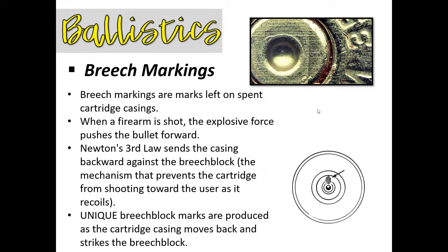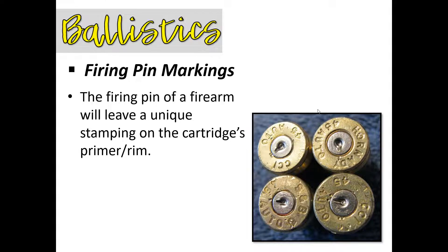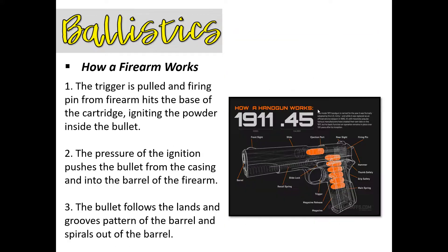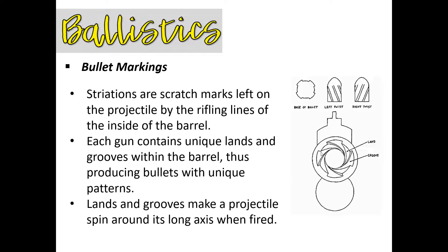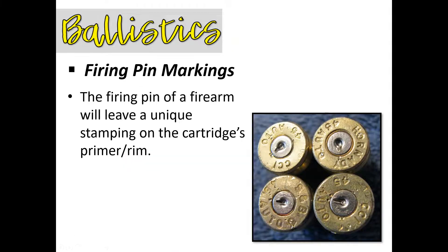Another marking unique to a cartridge casing is the firing pin marking. The firing pin of a firearm leaves a unique stamp where it punches the back of the primer and rim, igniting the gunpowder. You get unique marks at that point of contact. Like a fingerprint, investigators can use a microscope or topography to determine if the casing was fired from a suspect's weapon.